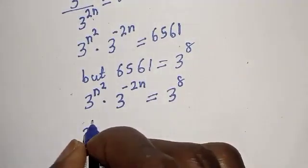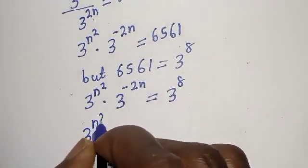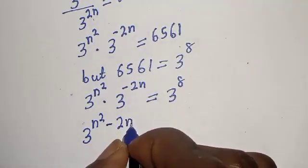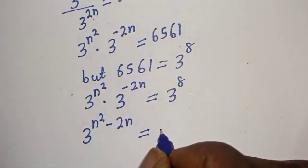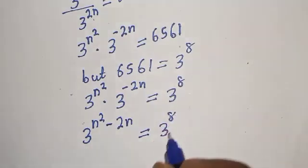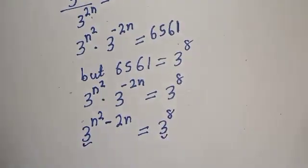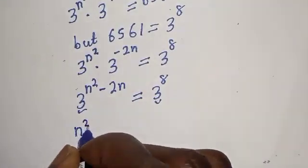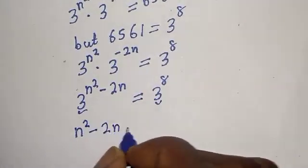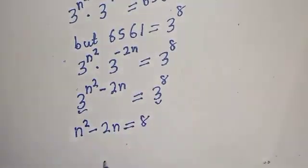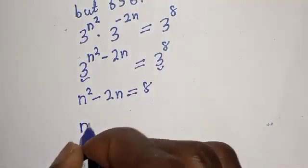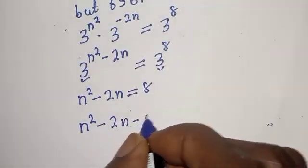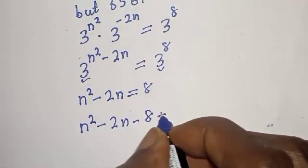Since we are adding exponents with the same base, this gives us 3 raised to power n squared minus 2n, equals 3 raised to power 8. Since we have the same base 3, we can equate the exponents: n squared minus 2n equals 8.